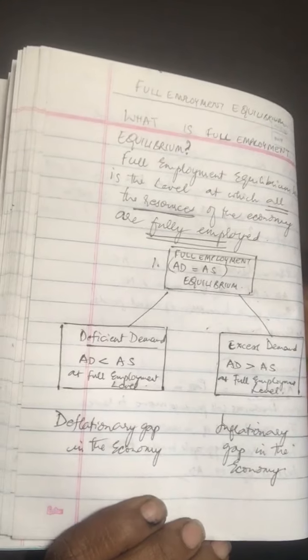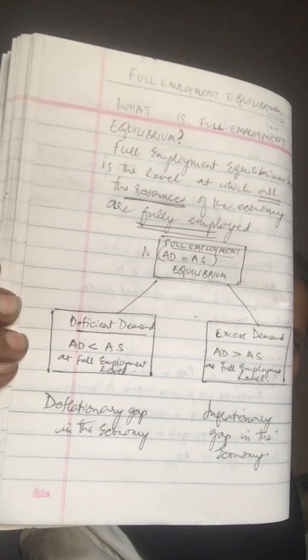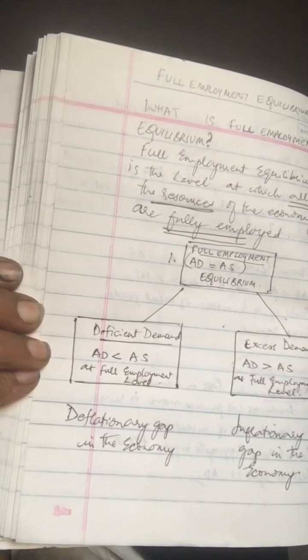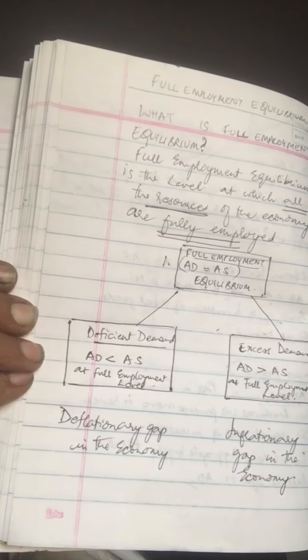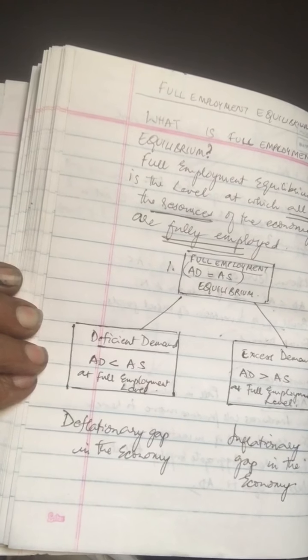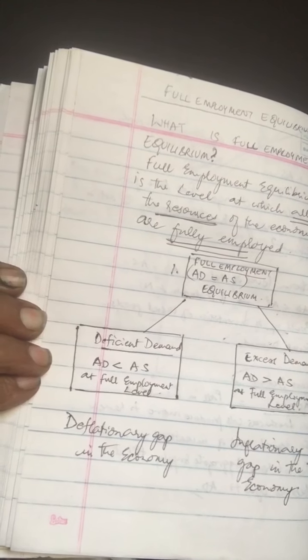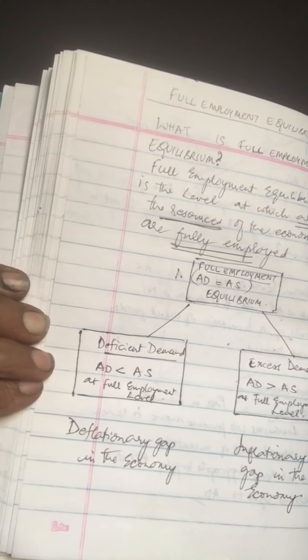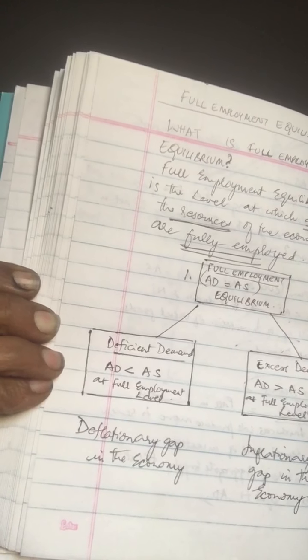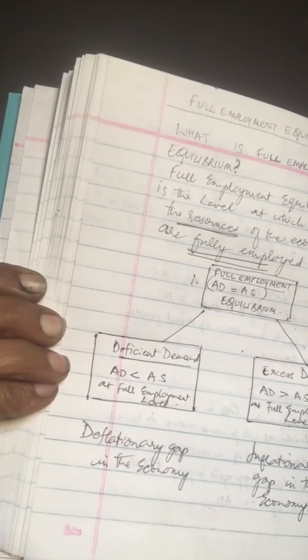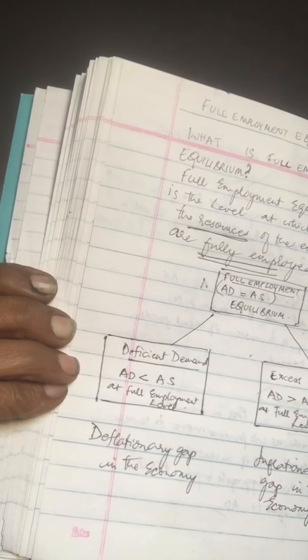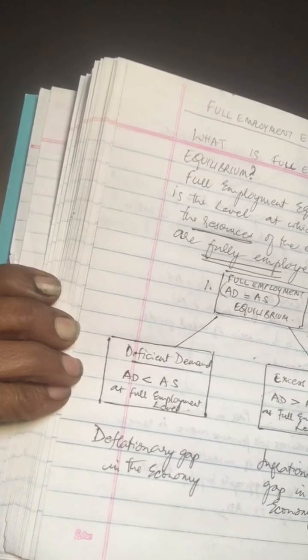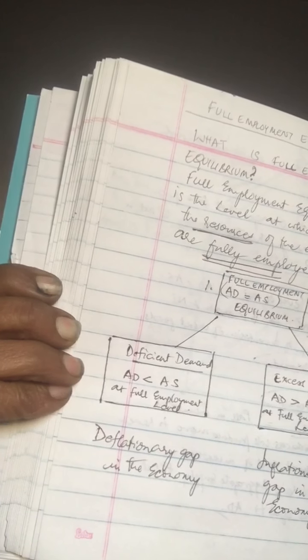We are going to talk about what is full employment of resources, with a little theoretical exposition. In the previous class, we analyzed the determination of equilibrium level of income within the Keynesian framework. According to Keynes, the equilibrium level of income need not necessarily be at the full employment level, though full employment equilibrium is an ideal situation which every economy tries to achieve but may be unable to do so.